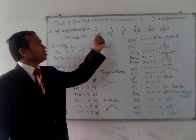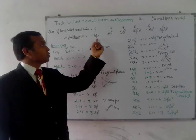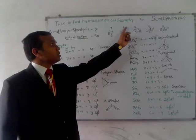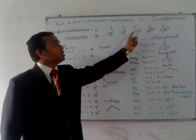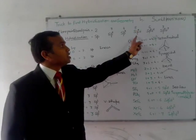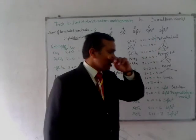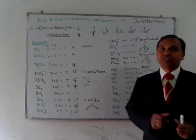If the sum comes to 2, then the molecule will be sp hybridized. If the sum is 3, then it is sp2. For 4, the hybridization will be sp3. For 5, sp3d. For 6, sp3d2. And for 7, sp3d3 hybridization.